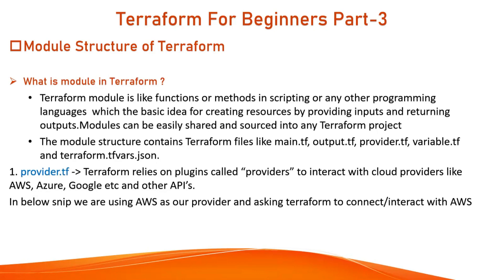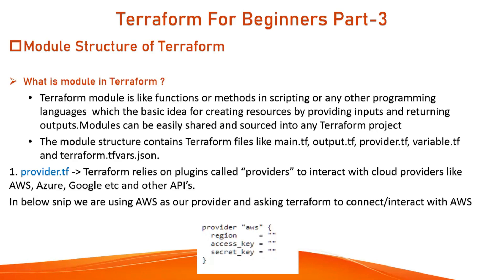What are the module structures? The module structure contains Terraform files like main.tf, output.tf, provider.tf, variable.tf, and terraform.tfvars.json. Just like Ansible uses the .yml extension for YAML files, Terraform files use the .tf extension. Let's begin with the first file, which is provider.tf.